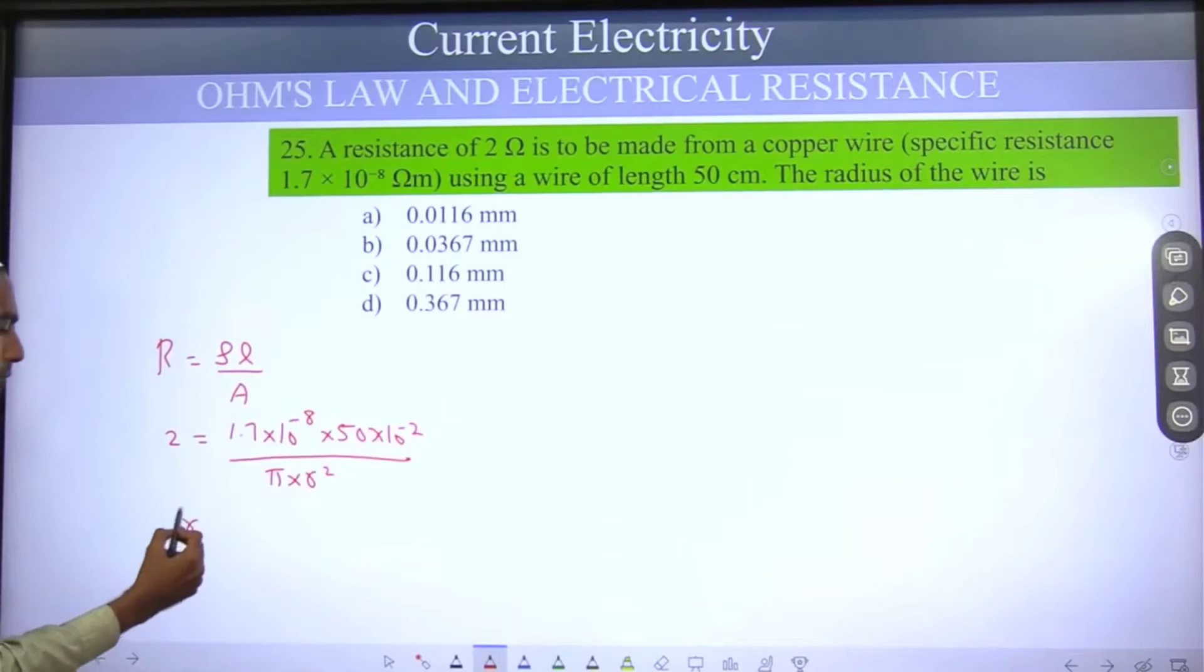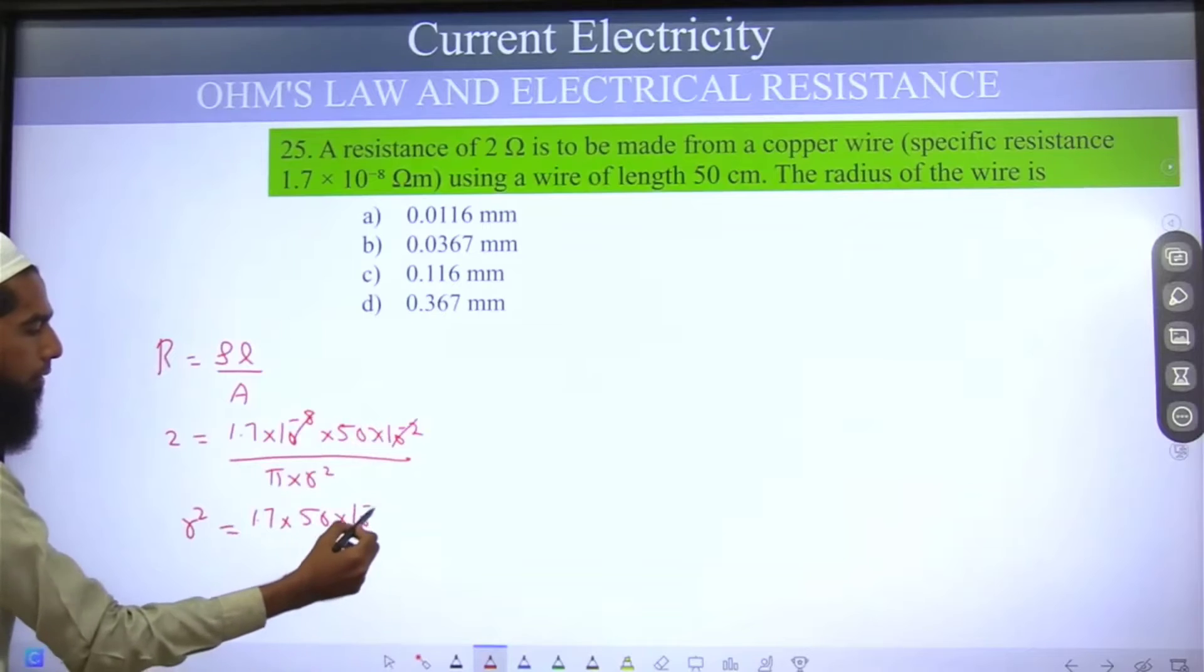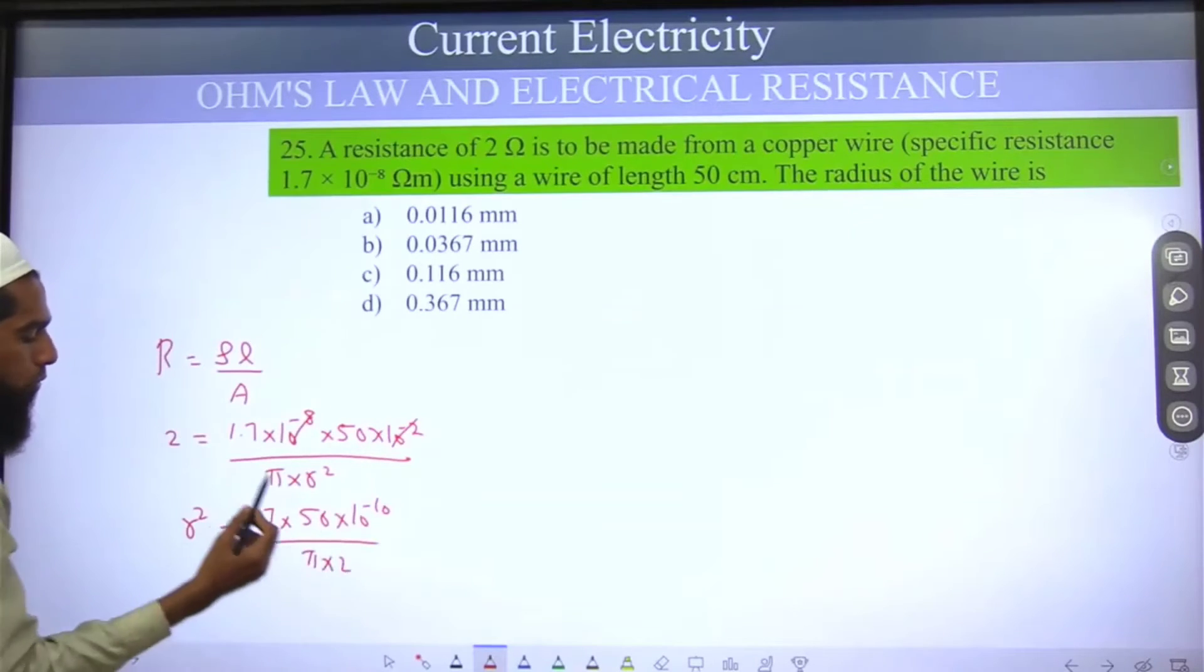R square is equal to 1.7 into 10 power minus 10 divided by pi into 2.